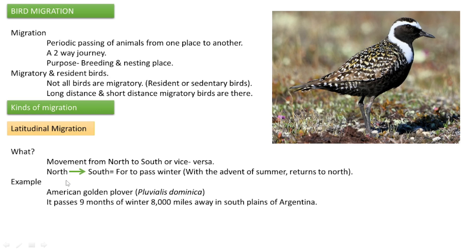Birds usually do latitudinal migration to avoid winter, and with the return of summer they migrate back north. An example of latitudinal migration is the American Golden Plover, scientific name Pluvialis dominica. It spends nine months of winter about 8,000 miles away from its home, in the south plains of Argentina.